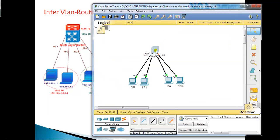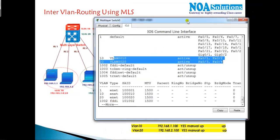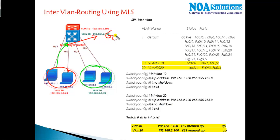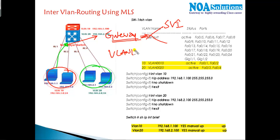This VLAN assignment is the same as what we did in previous labs. Now, if we want to do inter-VLAN routing — making traffic from VLAN 10 reach VLAN 20 — it has to go through the multi-layer switch. The problem is that a gateway is required to forward traffic between VLANs.